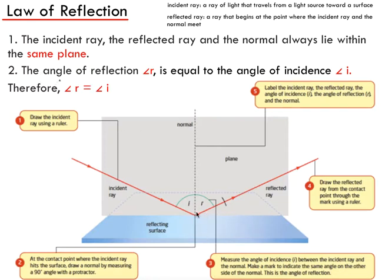Your angle of incidence and your angle of reflection should be equal. You can continue with your ruler, drawing your reflected ray from your point of contact, and then it's always good practice to go back and label your incident ray, your reflected ray, your angle of incidence and reflection, as well as your normal.